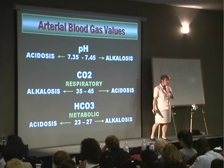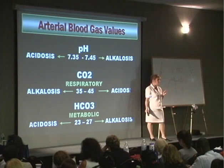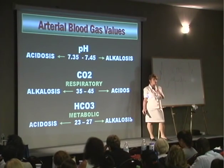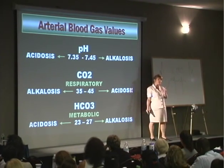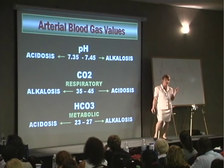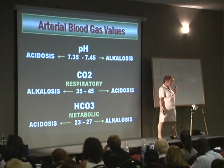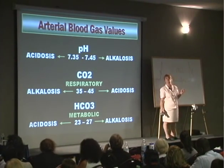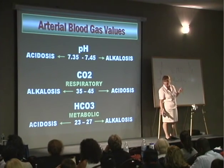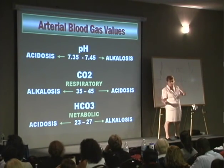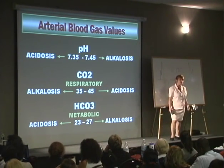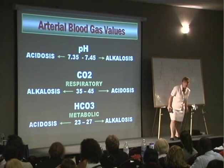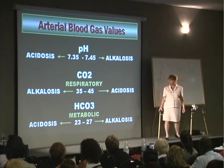So if I have a CO2 of 64, I'm in a respiratory acidosis. I got a bicarb of 9 — I'm in a metabolic acidosis. I got a CO2 of 28 — I'm in a respiratory alkalosis. I got a bicarb of 37 — I'm in a metabolic alkalosis. All right, good.